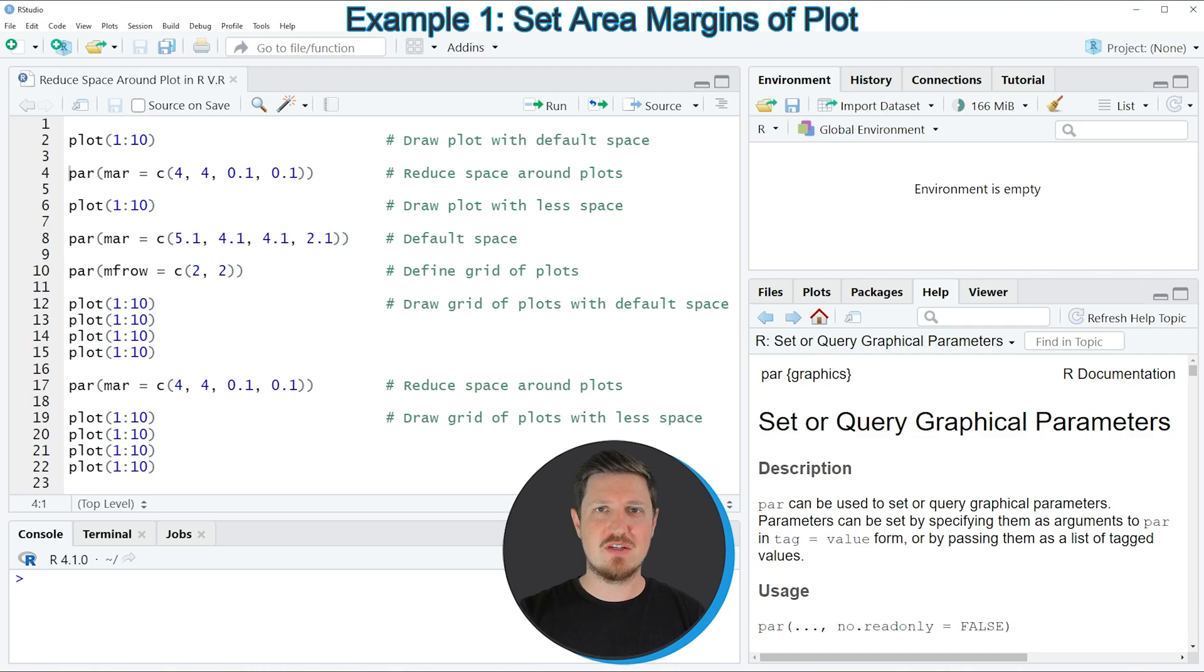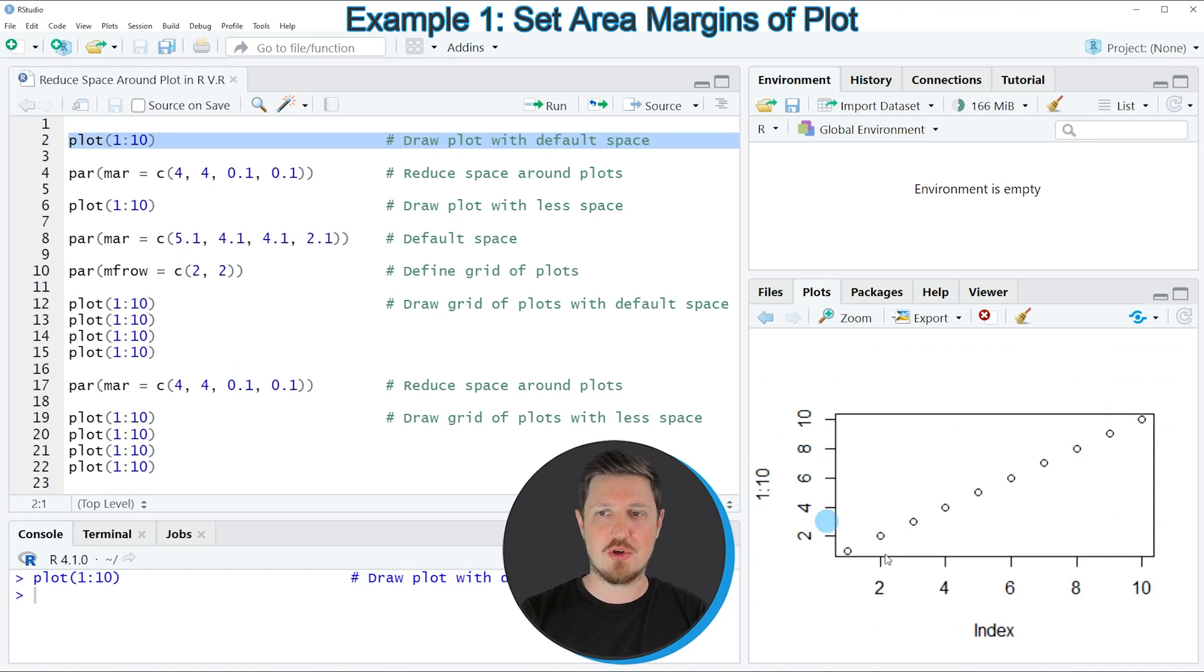In this video I will show you an example based on the plot that we can create in line 2 of the code. So if you run line 2, you can see at the bottom right that we have created a new scatter plot which has some space around the plotting area.